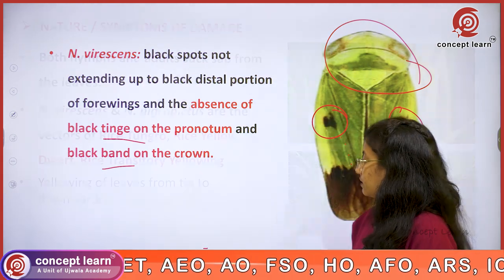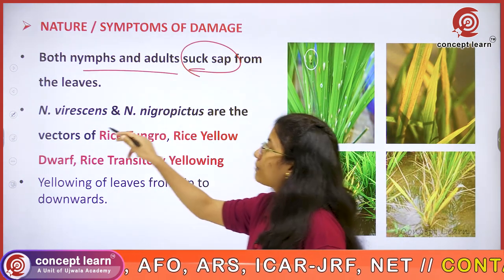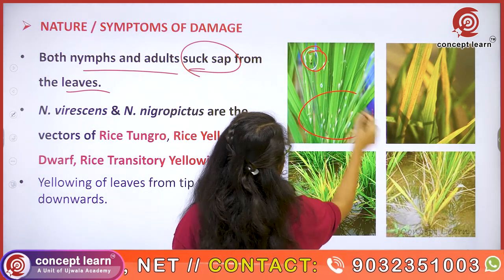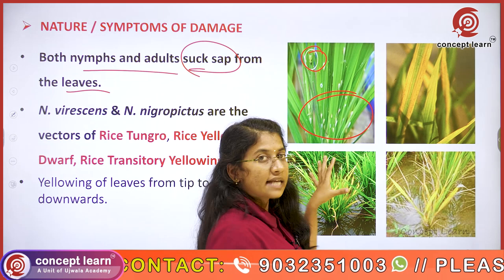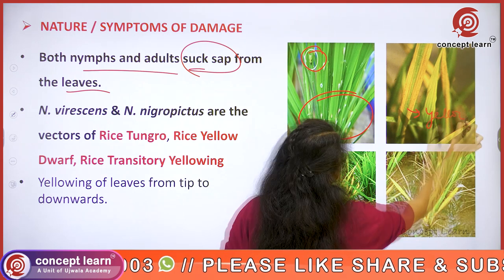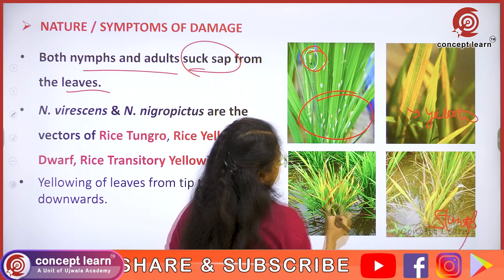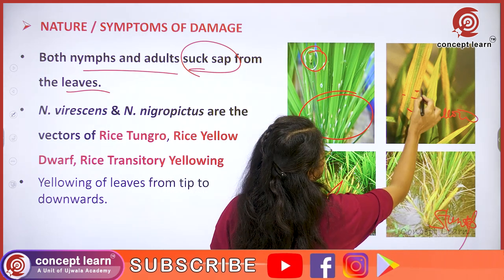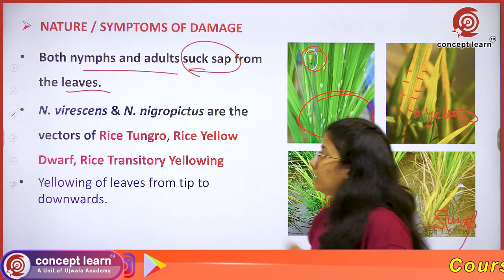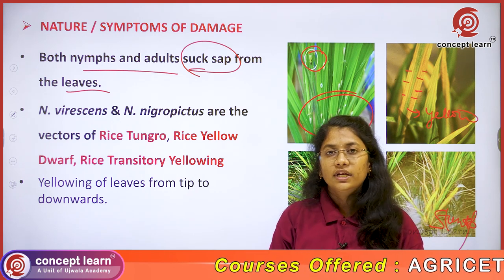In both species, nymphs and adults suck sap from the leaves. As they suck sap, the leaves turn yellow and become stunted in growth. You can see here that the mid portion of the leaf is becoming yellow due to the attack of this rice green leafhopper.